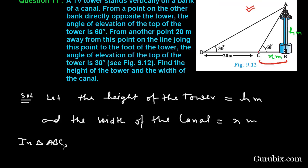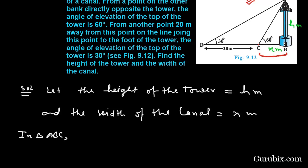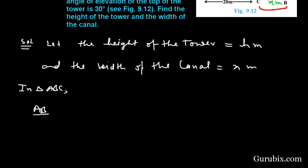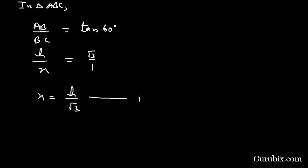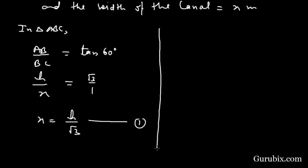Now we shall move to triangle ABC. In triangle ABC, we shall find the ratio of AB and BC. This ratio is tan(theta), and theta is 60 degrees. We know that tan(60°) = √3. AB is h and BC is x, therefore x = h/√3. This is our equation number one.